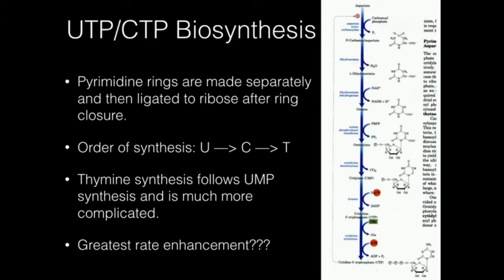Orotidylate decarboxylase is really impressive because it has the greatest rate enhancement of any enzyme known. The actual decarboxylation of orotidylate to uridylate (UMP), without an enzyme — uncatalyzed — should take about 37 million years. This enzyme does it in milliseconds. And the enzyme actually never even touches the orotidylate. This carboxyl group has a negative charge, and all the enzyme does is strategically place an aspartate with also a negative charge in very close proximity to that carboxyl group, creating so much repulsion that the carboxyl group just falls off. That's the decarboxylation — it just puts the aspartate really close to it and causes the carboxyl group to be removed.